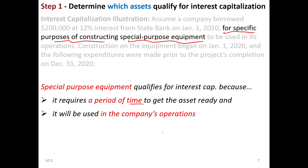How does this contrast with another scenario? Think about manufacturers like Caterpillar who build special-purpose equipment for the purpose of selling or leasing it on a regular basis — that's their whole business. That's not what we're talking about here. We're talking about building our own specialized brewing facility, for example, from the ground up for our own operations. Anything built by a company that sells or leases buildings or equipment regularly — those interest costs get expensed, not capitalized.